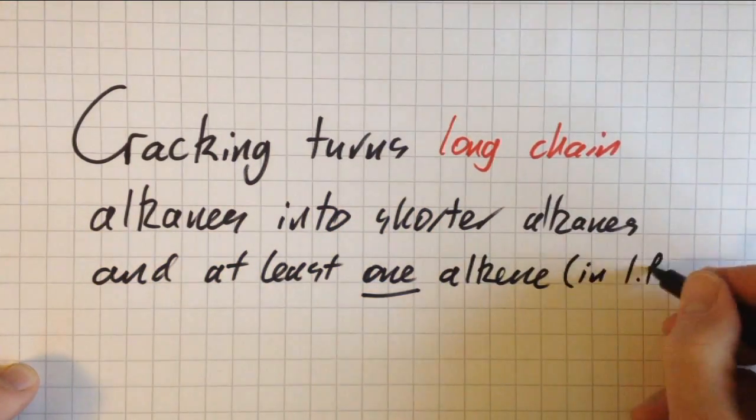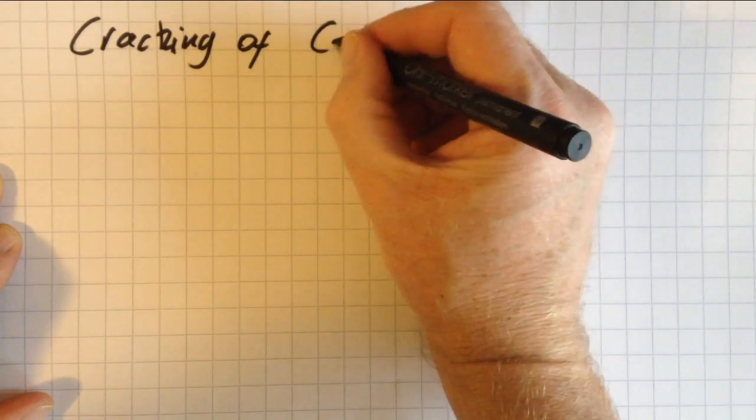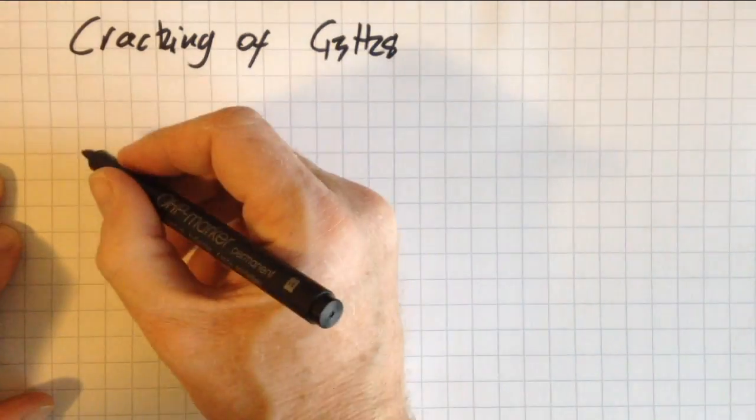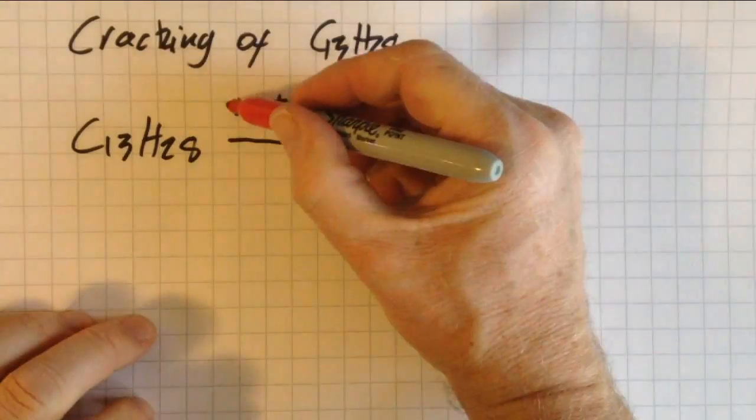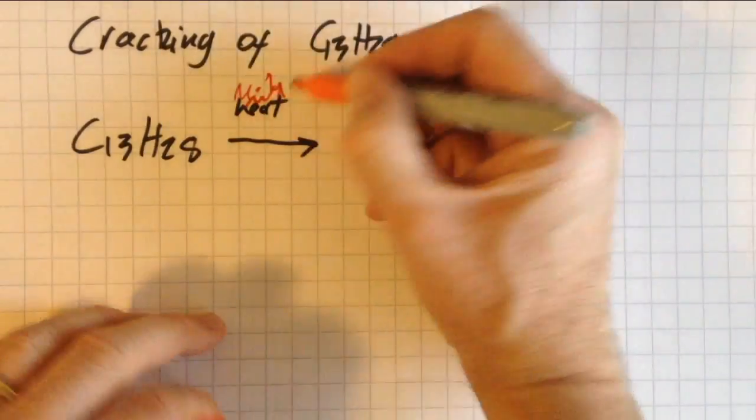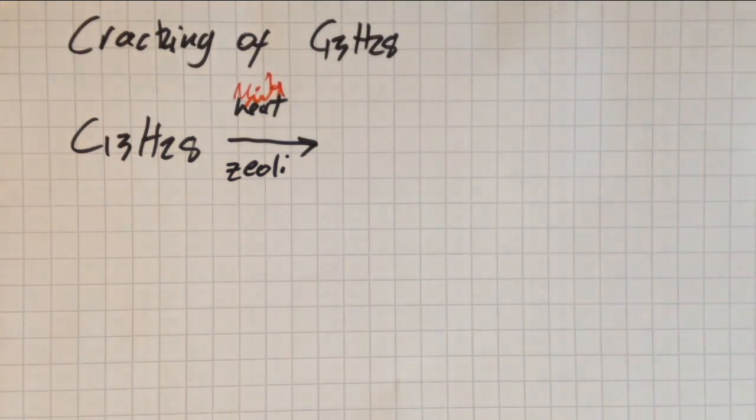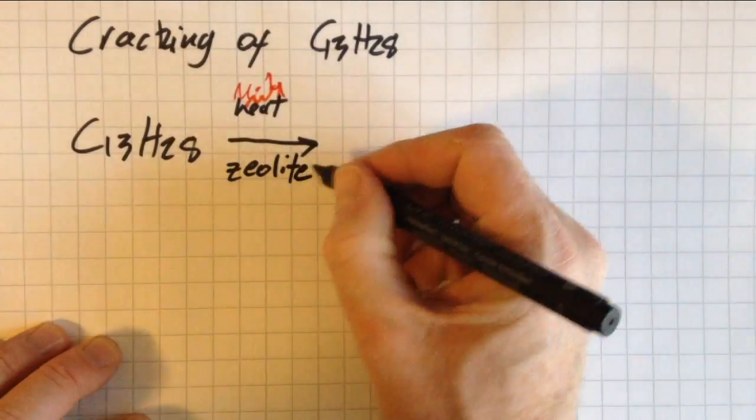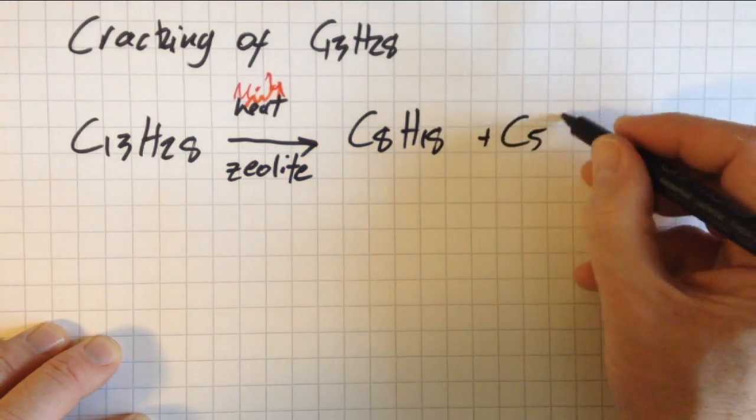In IB, let me give you a couple of examples. So the cracking of C13H28 - the syllabus says you have to use heat, but the books say you also need to use zeolite catalyst. Okay, but whatever we're doing, I'm going to make an alkane of my choice and an alkene of my choice.